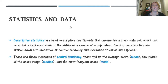Descriptive statistics are brief descriptive coefficients that summarize a given data set — either a representation of the entire population or a sample. Descriptive statistics are broken down into measures of central tendency and measures of variability: how much the data clusters around an average and how far they spread out. There are three measures of central tendency: the mean, which is an average score like a GPA; the median, which is the middle of the score range; and the mode, which is the most frequent score. You can have multiple modes.